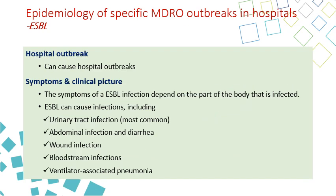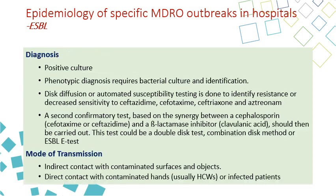ESBL can cause hospital outbreaks. Symptoms depend on the body site affected; ESBL especially causes urinary tract infection — the most common — abdominal infection, diarrhea, wound infection, bloodstream infection, and ventilator-associated pneumonia. Diagnosis is by positive culture; phenotypic diagnosis using disc diffusion or automated susceptibility testing is used to identify resistance and meet the definition, and a second confirmatory test can be done. Mode of transmission is either direct contact through the hands of healthcare workers who do not perform appropriate hand hygiene, or indirect contact by touching contaminated surfaces and objects.